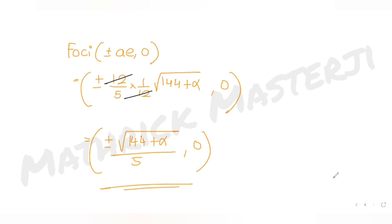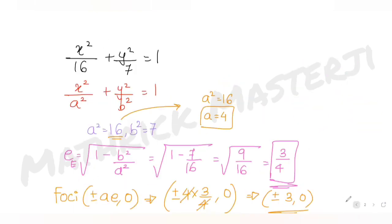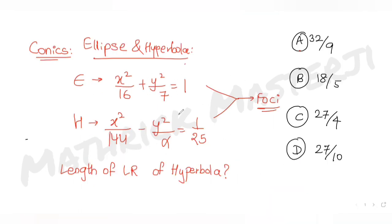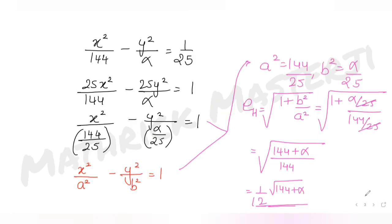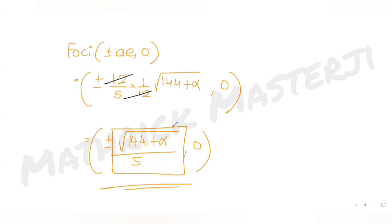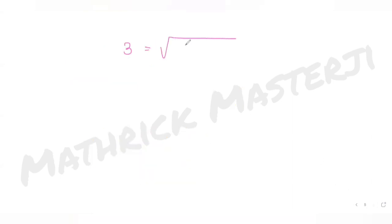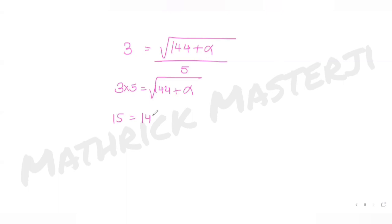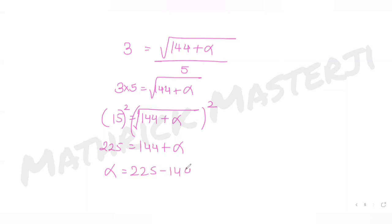Since the foci of the ellipse and hyperbola coincide, their x-coordinates must be equal. Setting 3 = √(144 + alpha)/5, we get √(144 + alpha) = 15. Squaring both sides: 144 + alpha = 225.